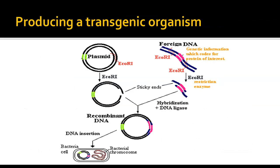To produce a transgenic organism, you take the plasmid from the bacterium and cut it with a particular restriction enzyme — this example uses ECO R1, which cuts at GAATTC. The foreign DNA containing your gene of interest is cut with the same restriction enzyme on both ends, then put together with the cut plasmid. The DNA will hybridize into the plasmid, and DNA ligase is used to attach the ends together, producing a recombinant plasmid. This can then be inserted into a bacterial cell and the bacteria grown in culture to make lots of copies that will produce whatever the gene of interest codes for.